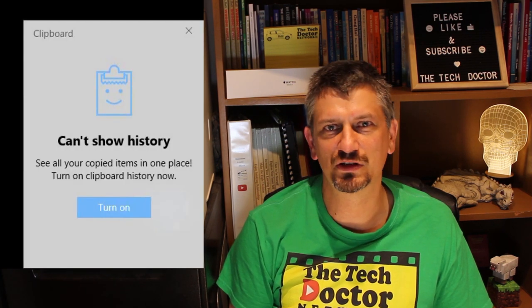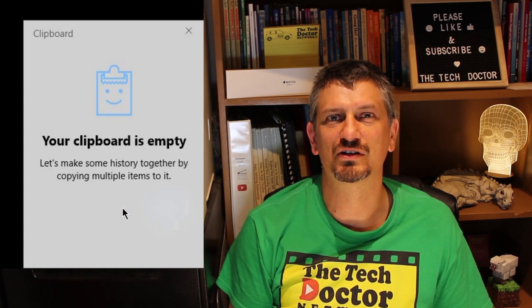The first step is to make sure clipboard history is turned on, so we need to press the Windows key and the V key on the keyboard. This will pop up the clipboard history dialogue box. If it's not activated, you'll see this dialogue box, which then allows you to click the turn on button to turn on clipboard history.